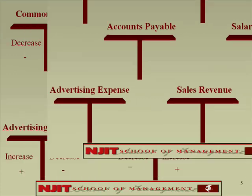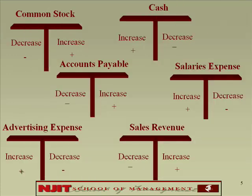Here are the answers. Common stock is a liability. Accounts payable is a liability — decrease left, increase right. Go through each one. Did you get the answers right?